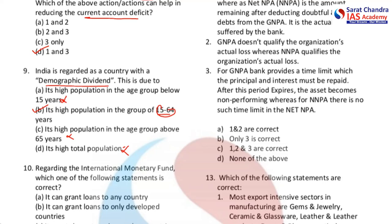Next question: regarding the International Monetary Fund, each of the following statements is correct. The IMF especially intervenes when there is a balance of payments crisis. When there is high current account deficit and your exports are lower than imports, remittances are low, FIIs and FDIs are also very low, your net outflow of funds is far higher than your inflow of funds — that leads to a balance of payments crisis.